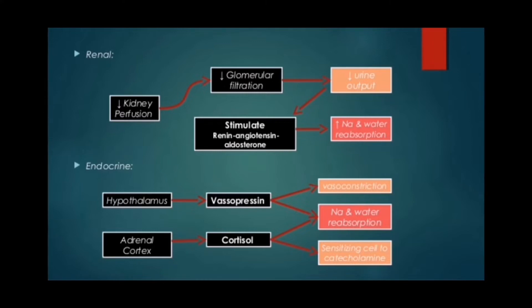The renin-angiotensin-aldosterone system leads to increased sodium and water reabsorption. In the endocrine system, decreased tissue perfusion to the hypothalamus causes release of vasopressin. From the adrenal cortex there is release of cortisol, both of which lead to vasoconstriction and water resorption. Cortisol also stimulates synthesis of catecholamines.